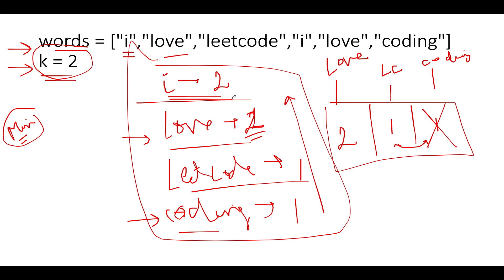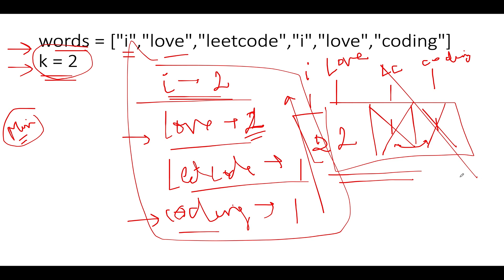Next, 'i' is added with frequency two. The size of the priority queue becomes three again, exceeding k equals two, so one element is deleted — 'leetcode' is removed. Now only two elements remain: 'love' and 'i'. We pull those out, add them to an array, and return the result.